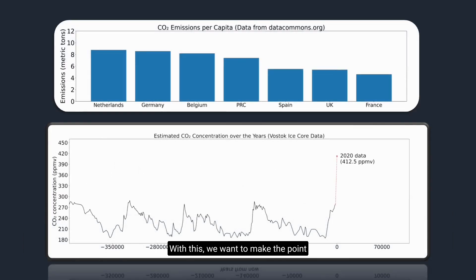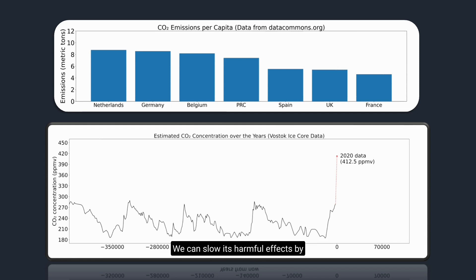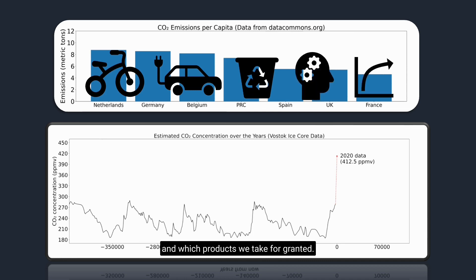With this, we want to make the point that atmospheric carbon dioxide remains a significant problem. We can slow its harmful effects by making conscious choices about how we consume and which products we take for granted.